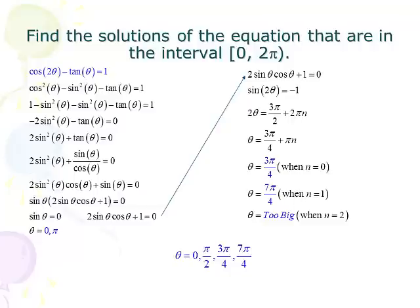Now I need to start putting values in for n until I get past 2π. So I put zero in for n and get 3π/4. Then I put one in for n, and I get 7π/4. And when I put two in for n, it's too big. It goes over 2π, so I'm done with that.